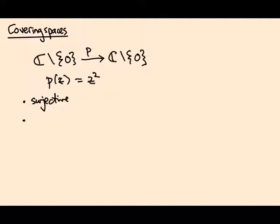In fact, every number apart from zero has exactly two square roots. That's actually why I removed zero, so that this would be true. It's a two-to-one map.